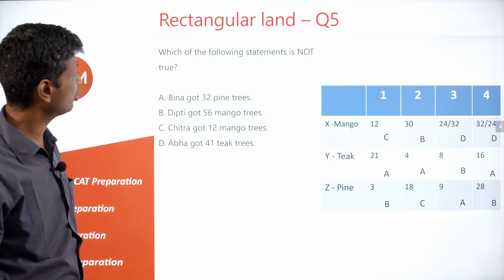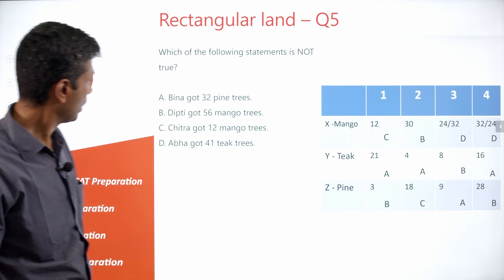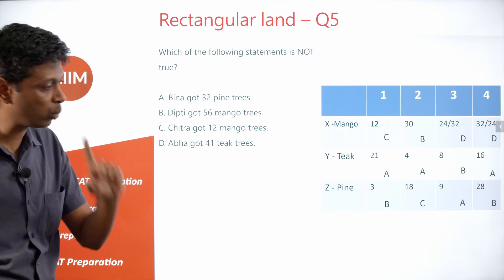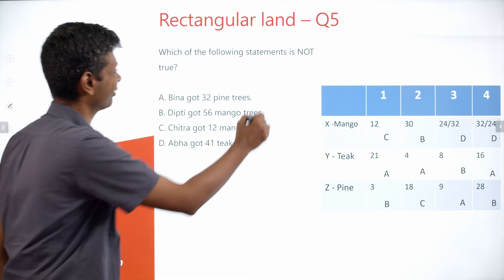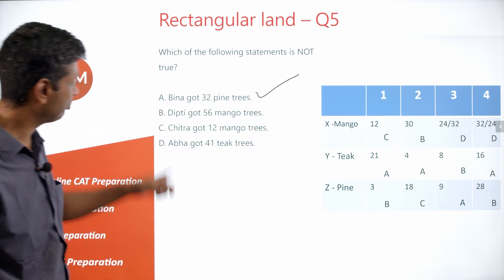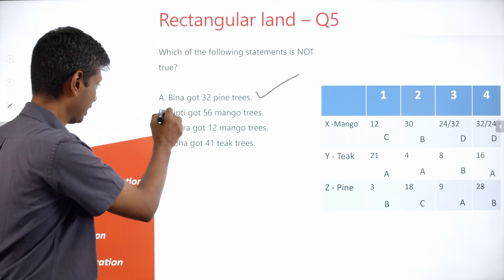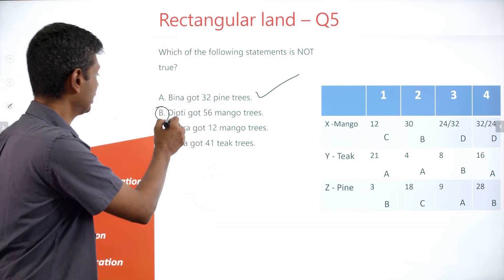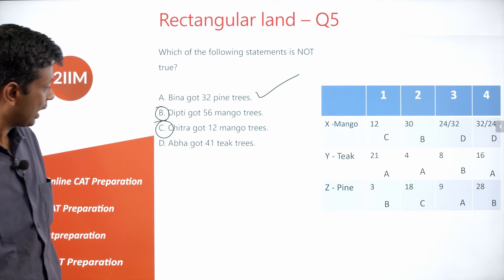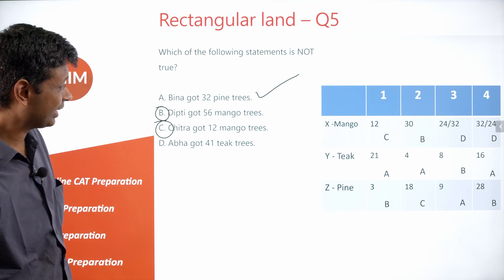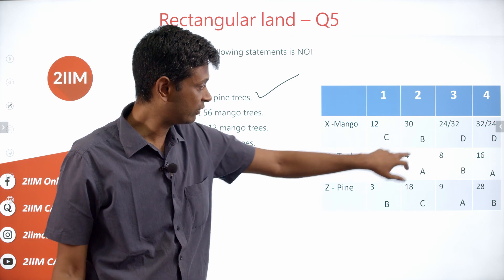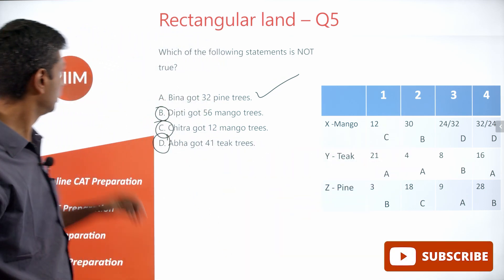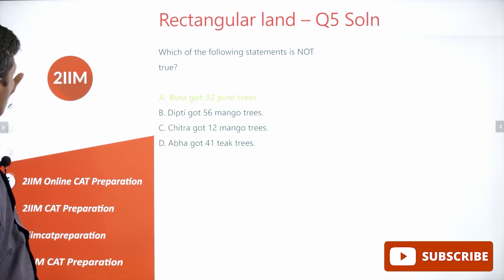Question 5: Which statement is not true? Bina got 32 pine trees — but Bina actually got 3 plus 28 equals 31 pine trees, not 32. That's the false statement. Deepti got 56 mango trees — correct. Chitra got 12 mango trees — given. Ava got 41 teak trees: 21 plus 4 plus 16 equals 41 — correct. So the answer is Bina got 32 pine trees.